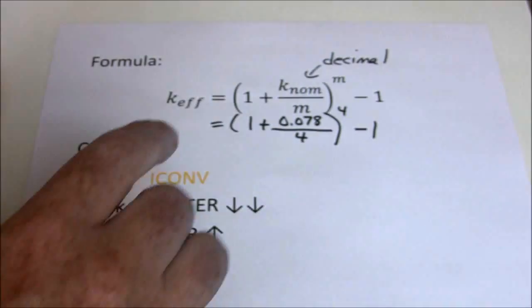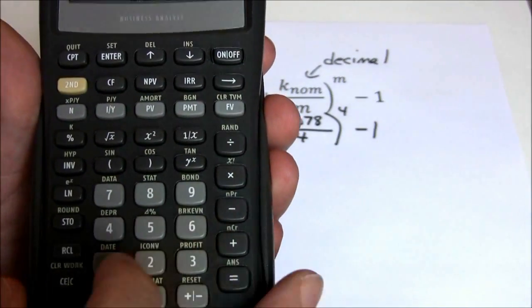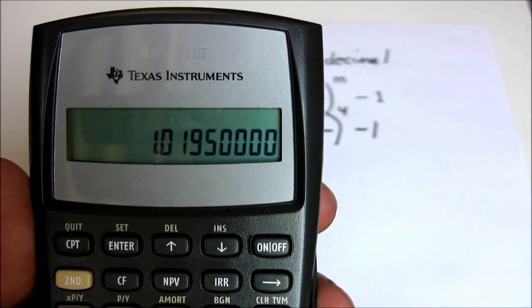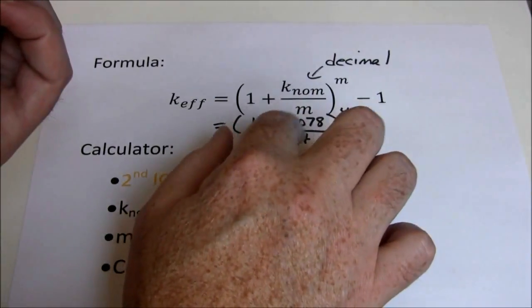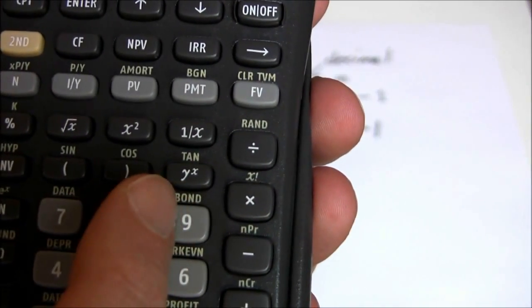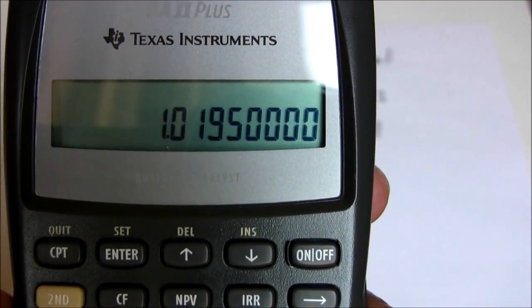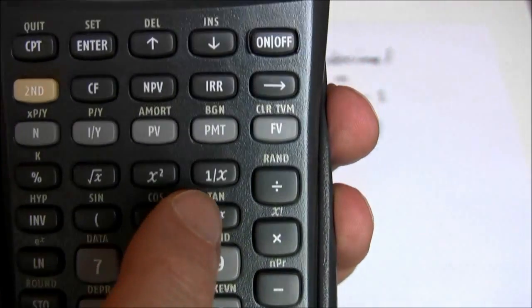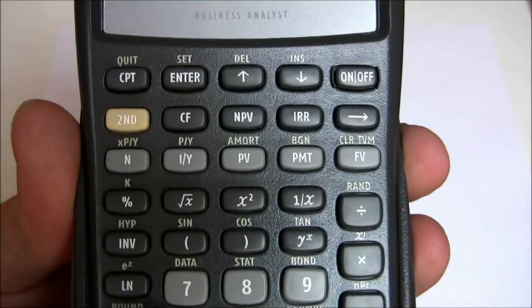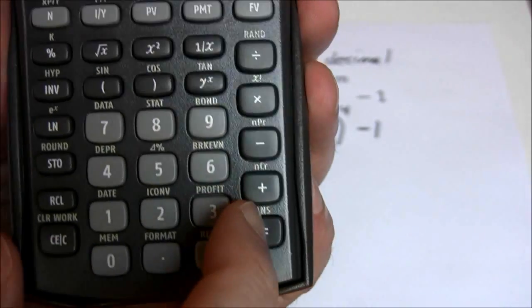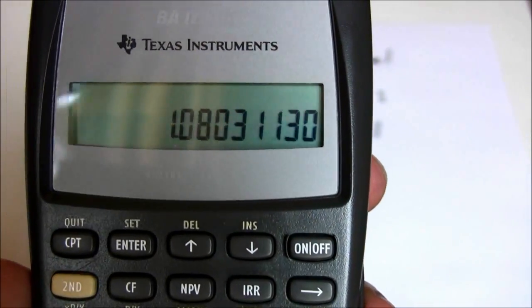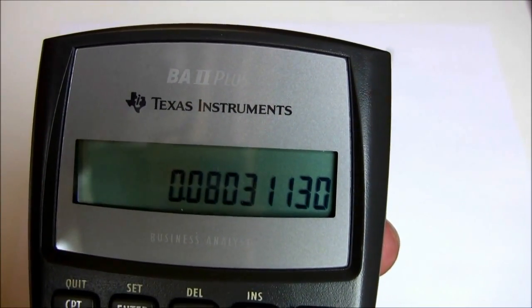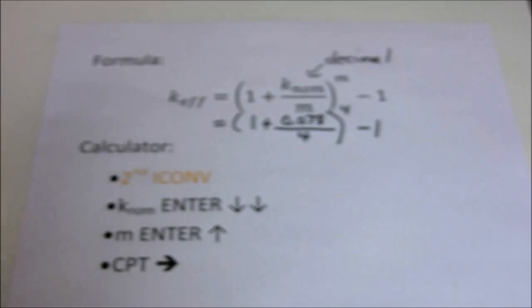Leave that as 0.0195, and now we're going to add the 1. So just plus 1 equals, gives us 1.0195. Now we're going to raise it to the 4th power. To do that we're going to use the Y to the X key on your calculator. The 1.0195 is your Y, 4 is going to be your X. So just press the Y to the X. Now it's waiting for you to enter the X, which is your 4. So just 4 equals. Gives you 1.0803. Subtract off your 1.